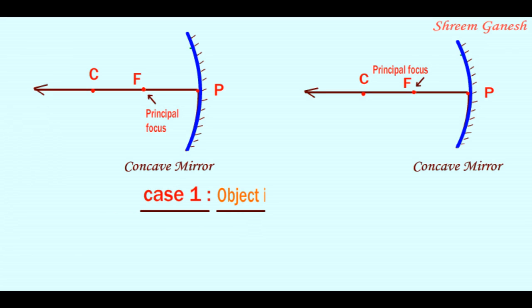Case 1: When object is placed at infinity. Let us consider an object is placed opposite to a concave mirror at infinity.